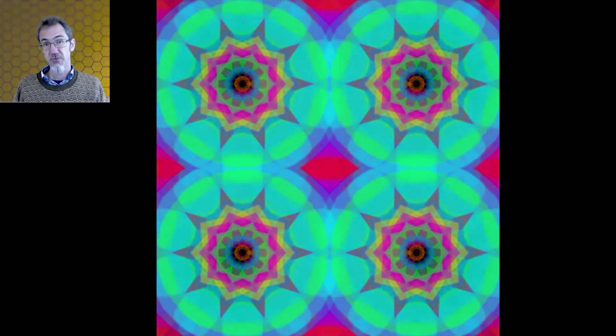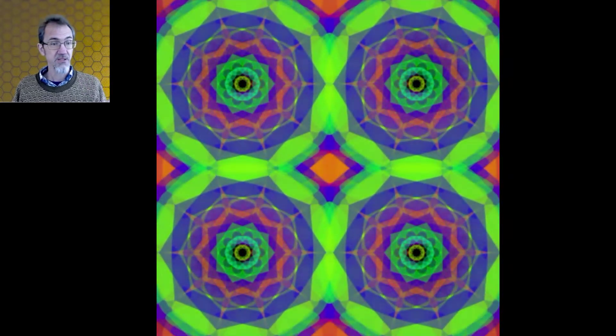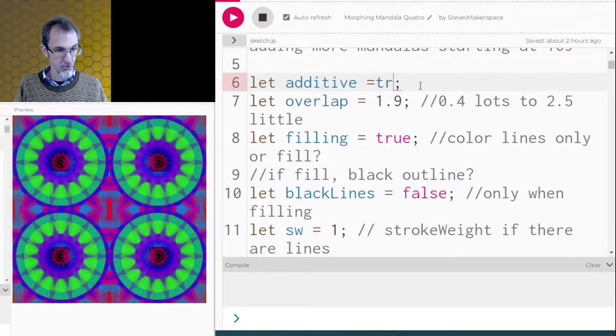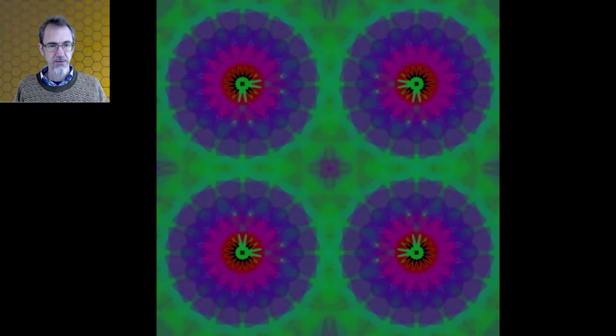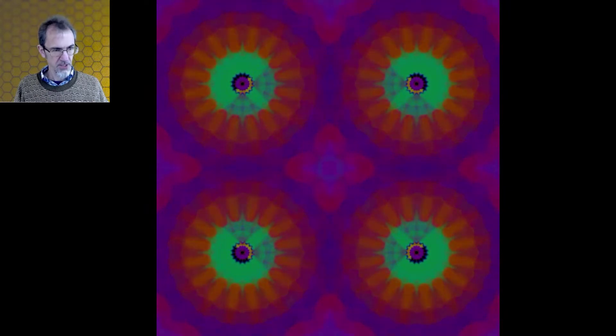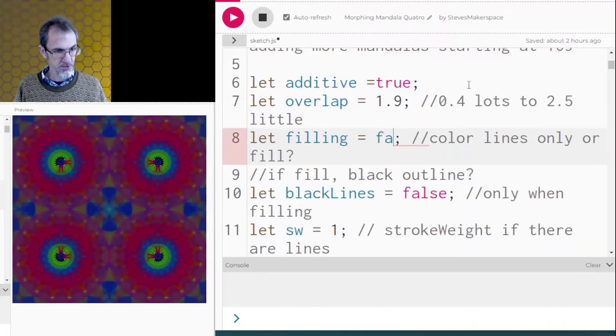I also have this version which makes four mandalas instead of one. So this is interesting because they overlap each other. Let's do new art, see what else we get. This also has the additive versus not additive. Let's change that to true. And we get something like this. Let's do the filling, filling the petals versus outlining the petals. We'll make that false. And we get something like this. It's kind of interesting that the outline of the petals, when it's doing that, it actually takes more processing power than to fill the petals. I'm not sure why that is.